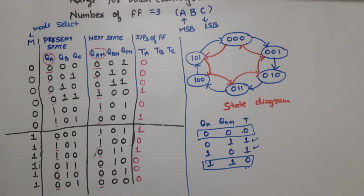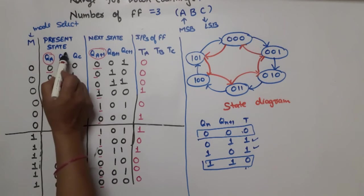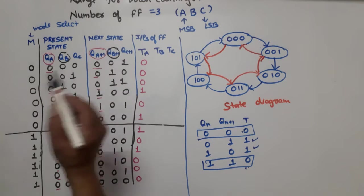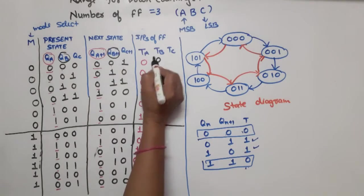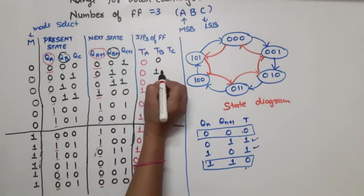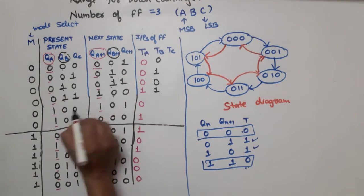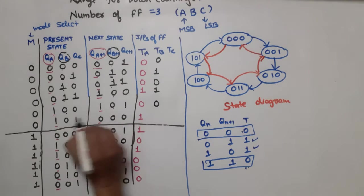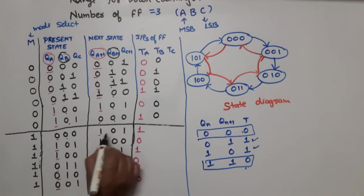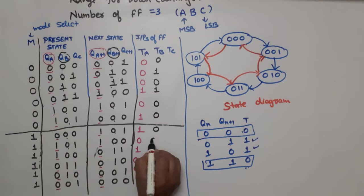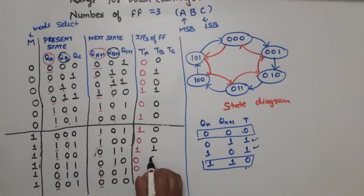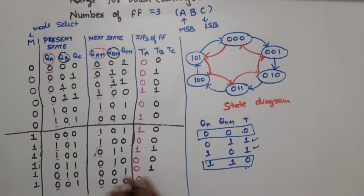To write TB values, we observe QB and QB+1. Going row by row: 0→0, no change is 0; 0→1, toggle is 1; 1→1, no change is 0; 1→0, toggle is 1; 0→0, no change; 0→0, no change. For down counting: 0→0, no change; 0→1, toggle is 1; 1→1, no change is 0; 1→0, toggle is 1; 0→0, no change is 0.